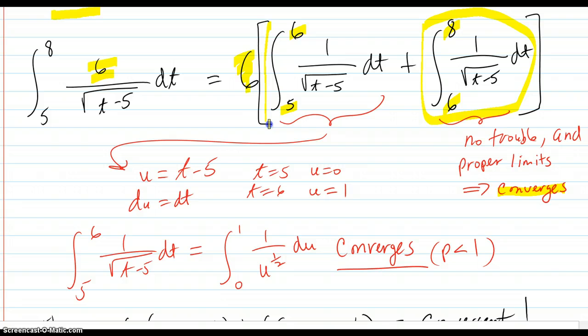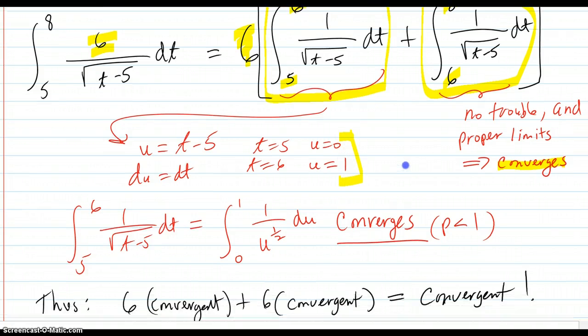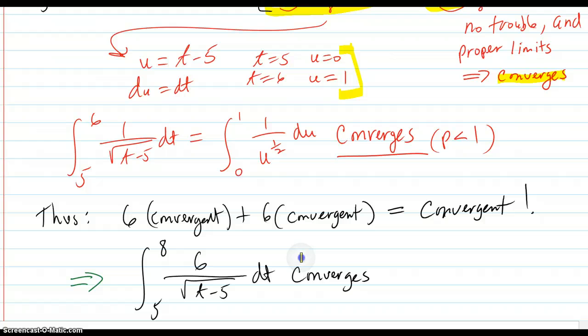Now let's work on this integral. Do a u substitution. Figure out the new limits. So that integral inside there, from 5 to 6, is equal to this. And that converges because the p-value, which is 1/2, is less than 1. So it converges.